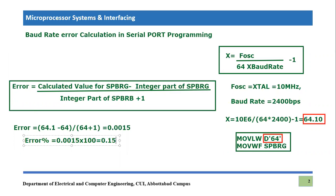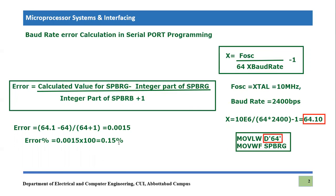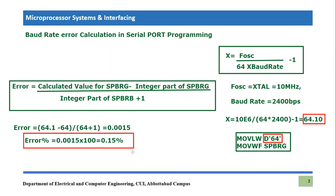Normally errors are evaluated in terms of percentage, so error percentage equals 0.0015 times 100, which becomes 0.15%. That's how you can calculate the error we can expect in serial port programming — the error in the baud rate that we are going to achieve. That baud rate will be achieved with this percentage of error.